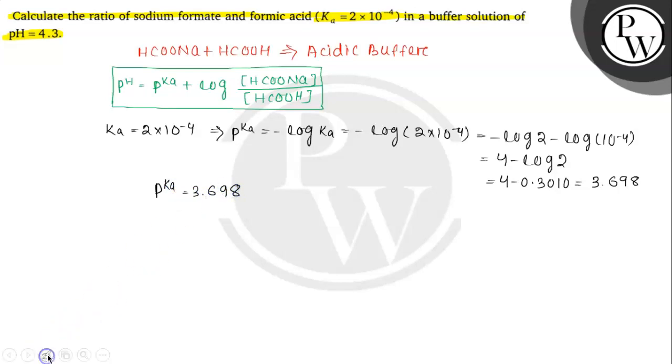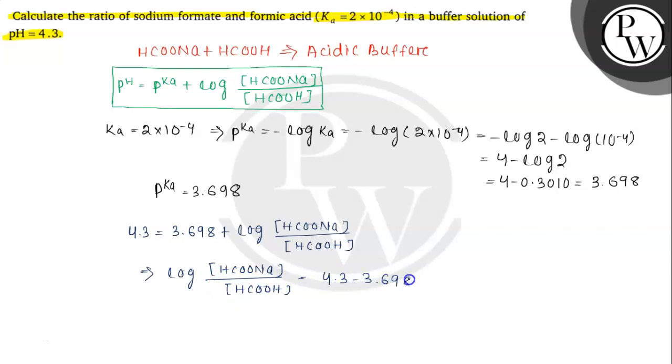Now we can put the values and find out the concentration of sodium formate to formic acid. So the value of pH is given, that is 4.3, which equals to pKa 3.698 plus log of concentration of HCOONA divided by concentration of HCOOH. So log of the ratio will be equals to 4.3 minus 3.698, which equals to 0.601.